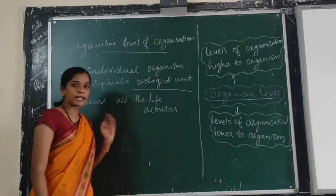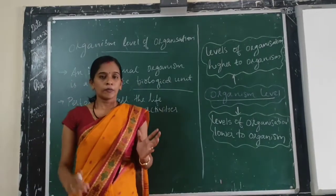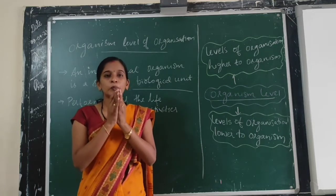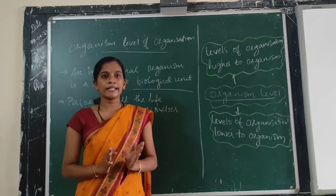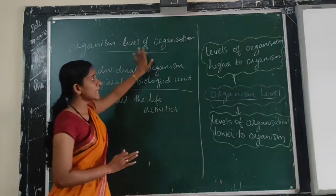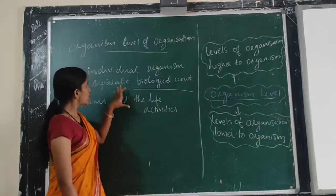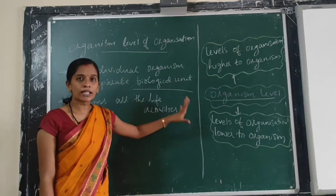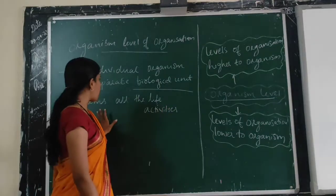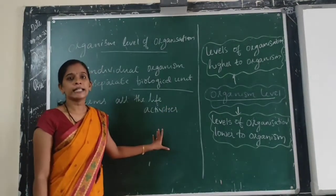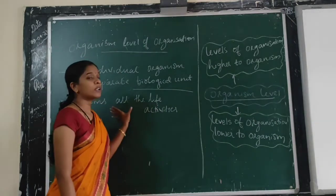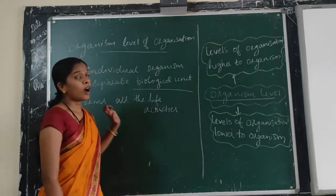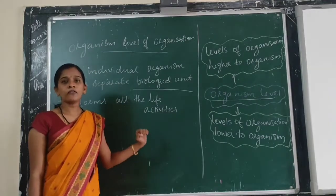All organisms are not considered together — they are considered to be separate. An individual organism, as a separate biological unit, can perform all the life activities independently. This is about organism level of organization.